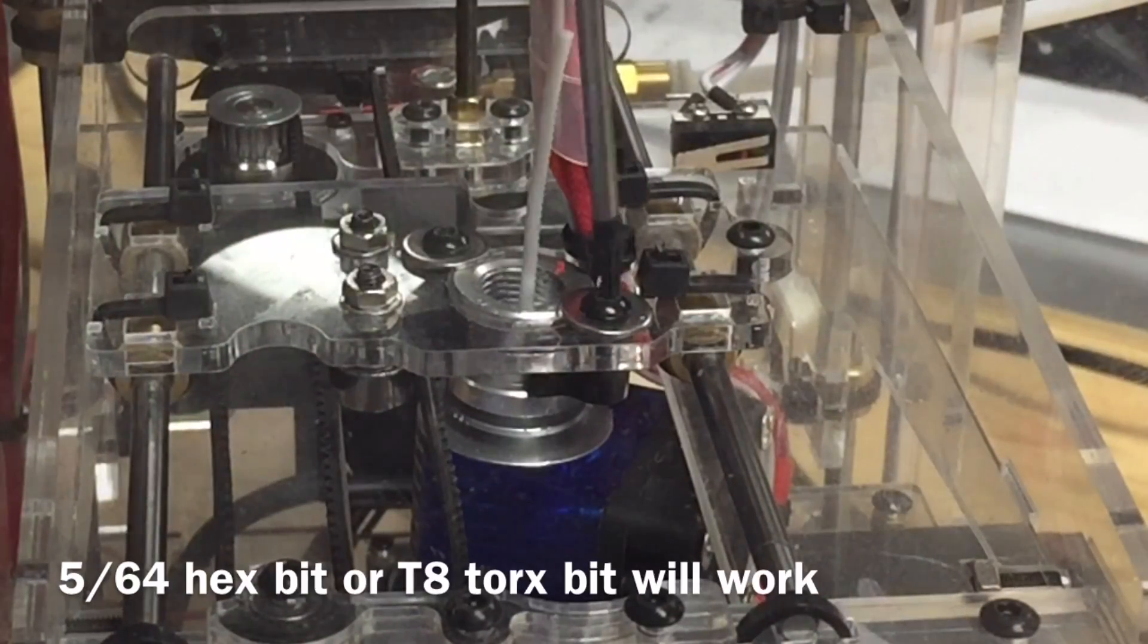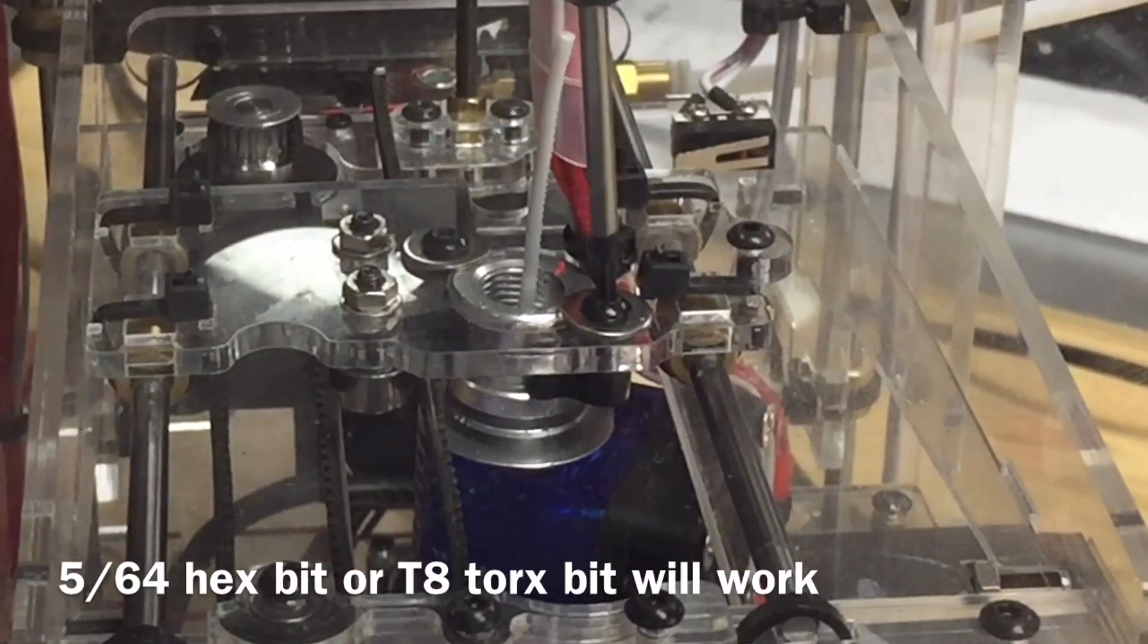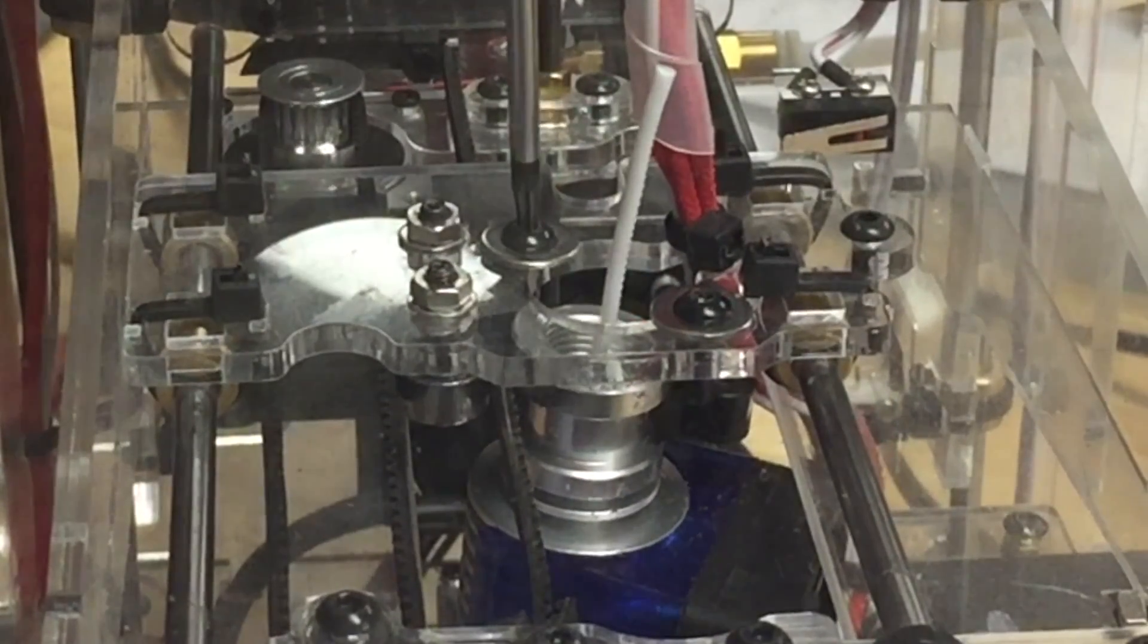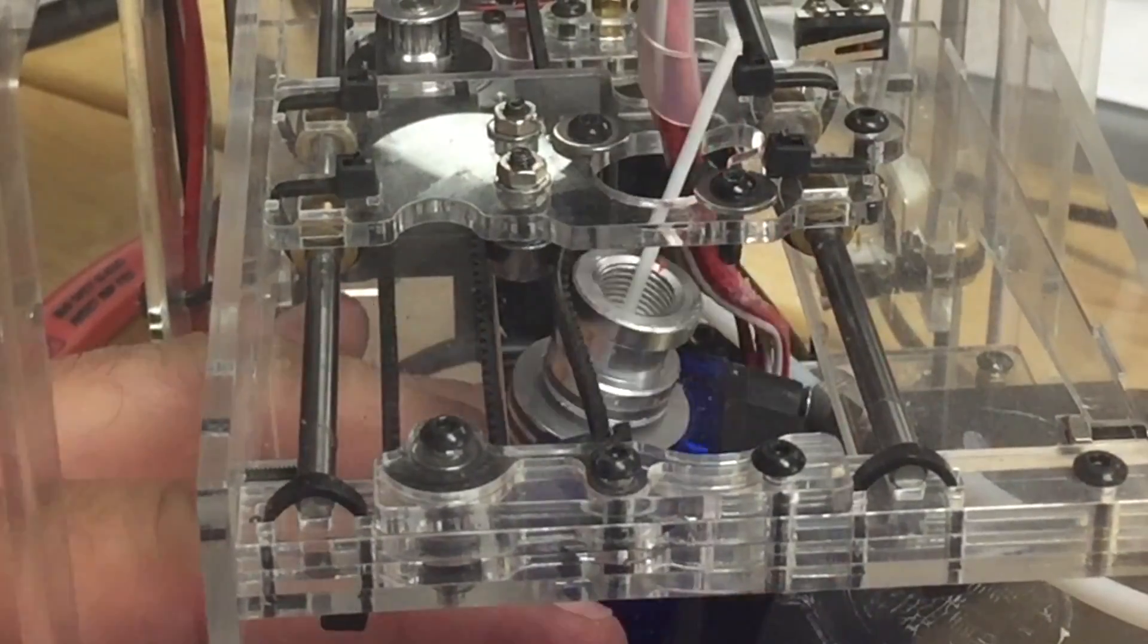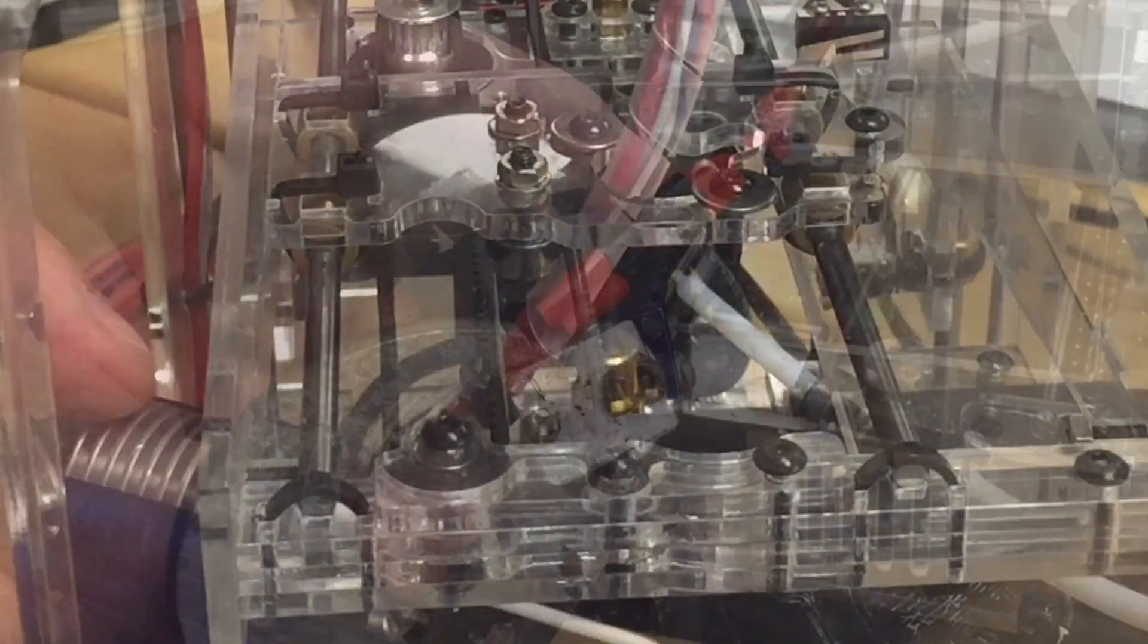Now the next step is to remove the two screws that hold the hot end in place. I used the T8 Torx screwdriver, but you could use a 5/64 hex screwdriver if you got one. Once you loosen it, just pull the whole unit out so you can work on it.